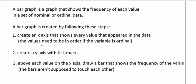The second step after creating the x-axis is to create a y-axis with tick marks, where the tick marks represent the frequencies. If a bar goes up to the first tick mark, it means that value has a frequency of one; if it goes up to the second tick mark, it has a frequency of two, and so on. Then you draw a bar above each value on the x-axis to show its frequency. In a bar graph, the bars don't touch each other — this emphasizes that the values are categories and not a continuous variable.